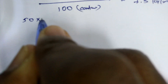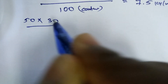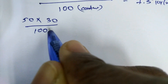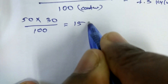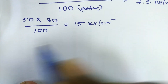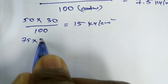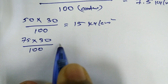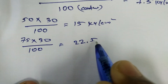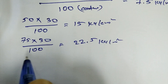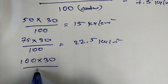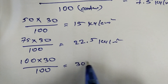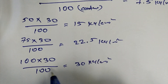For 50%: 50 divided by 100 multiplied by 30 equals 15 kg per cm². For 75%: that gives us 22.5 kg per centimeter. And for 100%, we have 30 kg per centimeter. This confirms what we have calculated.